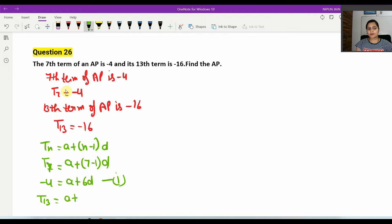Similarly, T13 equals a plus 12d. So a plus 12d equals minus 16. Now we have two equations: a plus 6d equals minus 4, and a plus 12d equals minus 16. We can subtract both equations.